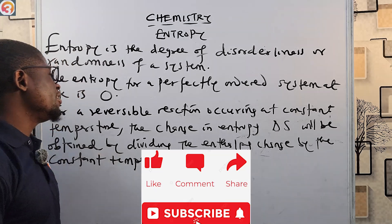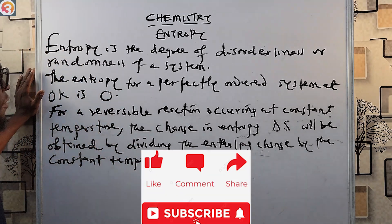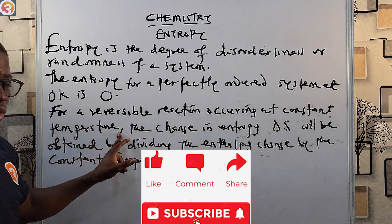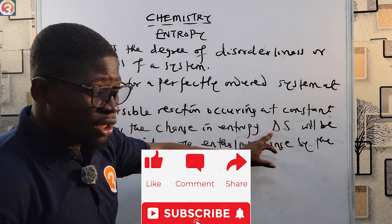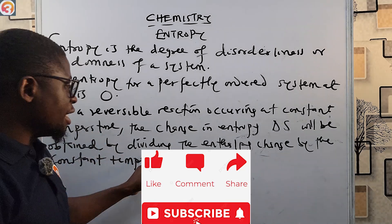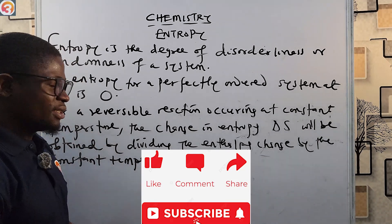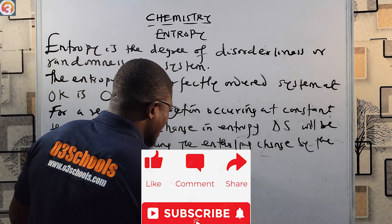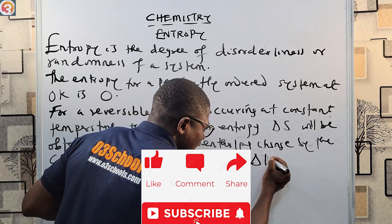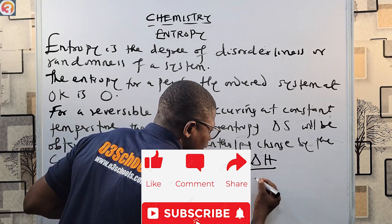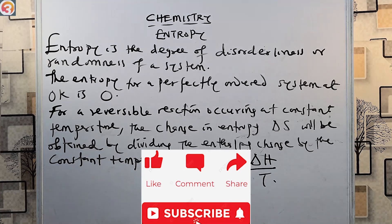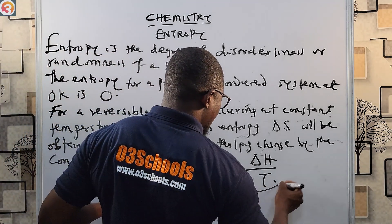So for a reversible reaction occurring at constant temperature, the change in entropy delta S equals the enthalpy change divided by the constant temperature. Mathematically: ΔS = ΔH / T. This is a very useful formula.